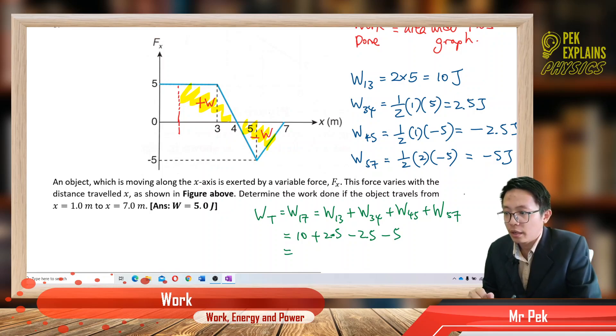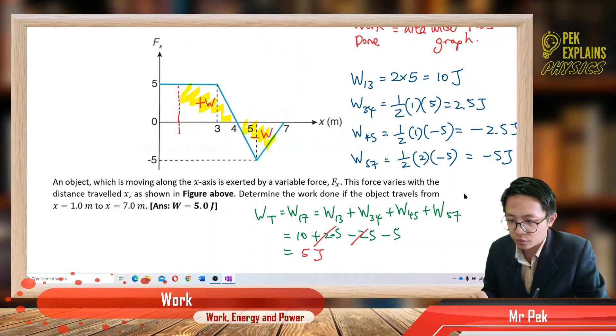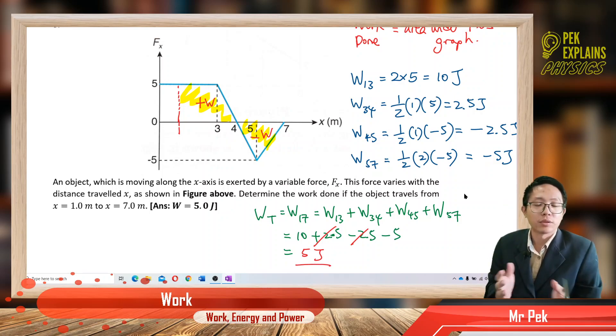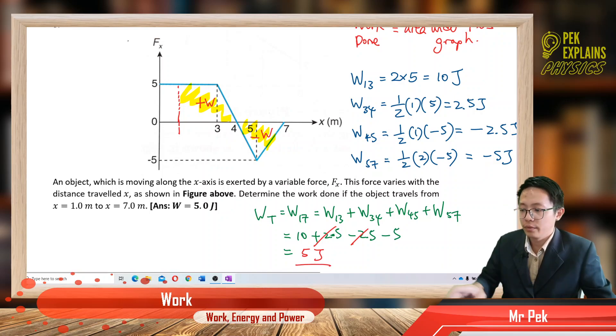So in the end, this one cancel. 2.5 minus 2.5. So in the end, our answer, we get 5 joules. So that's the total work done, which corresponds to the area under the graph. So be careful, we ask for work done from 1 meter to 7 meter. So the 0 to 1 meter area not included.